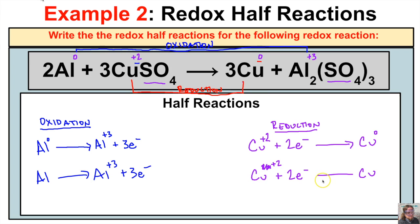We have our half reaction for the oxidation of aluminum and our half reaction for the reduction of copper. If you like what you see, click the button in the bottom right-hand corner to subscribe to my channel, and feel free to leave any comments or questions below. I really hope you guys found this helpful.